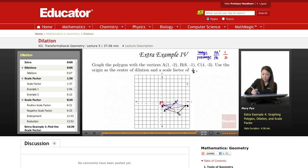So again, if the scale factor is smaller than 1, then you know it's going to be a reduction. It's going to be smaller. If it's greater than 1, then we know it's going to be bigger, bigger than this pre-image. So that's it for this lesson. Thank you for watching, educator.com.